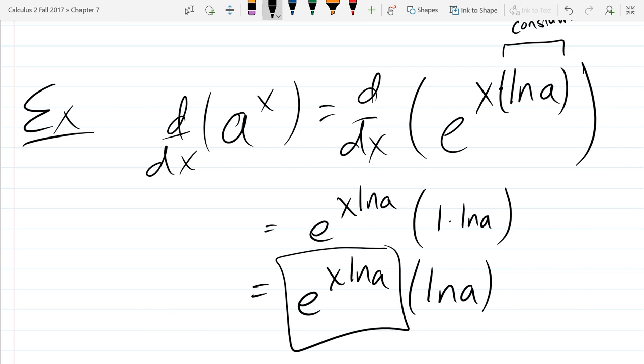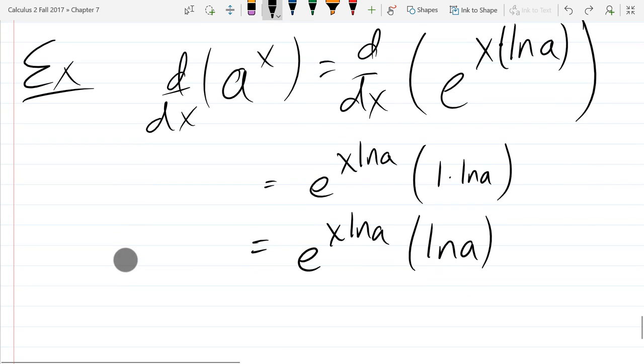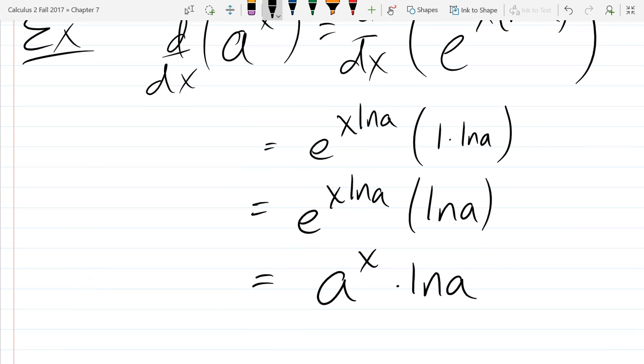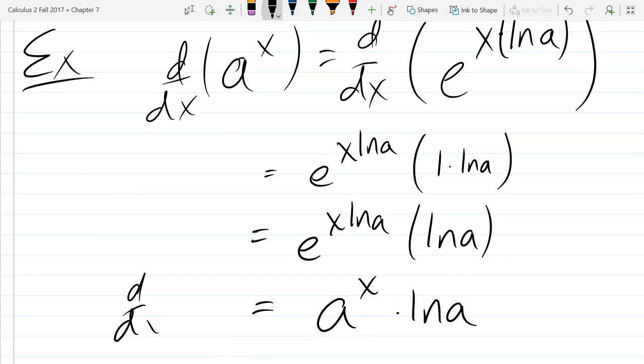How can I rewrite e to the x ln a? That would be a to the x. That's just the definition that we used. Yeah. So at the very top, I didn't write the definition down, but we used it right at the top of equality there. So we're just going to rewrite e to the x ln a as a to the x. That's just the definition. So this is the derivative a to the x. So it's itself multiplied by the natural log of a. So it looks really similar to e to the x. They're just a little constant you get out at the very end.